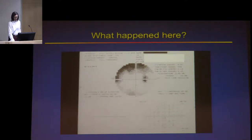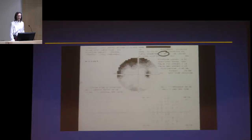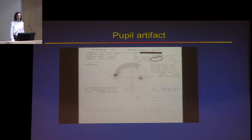Here's a classic artifact in visual field testing. What's going on? It could be a rim artifact or it could be ptosis — both have to be considered. In this case the pupil is 2 millimeters, and that's just not going to work. After the patient is dilated, you can see a much better response.